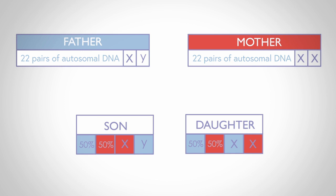You also need to know that the segments of DNA inherited by siblings are different. So the 50% inherited by one sibling from their mother will be different from the 50% inherited by another sibling.